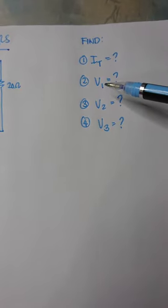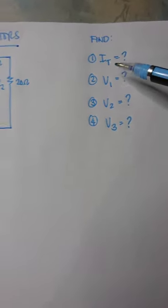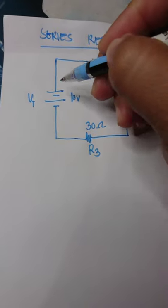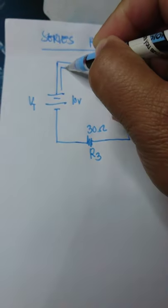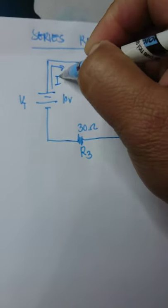We know that the total current is the current flowing from the source. This is our total current.